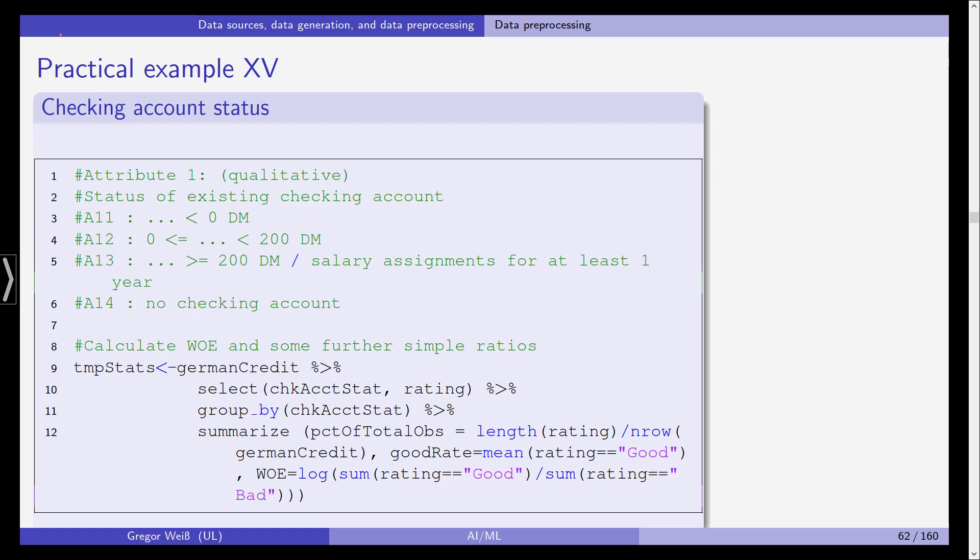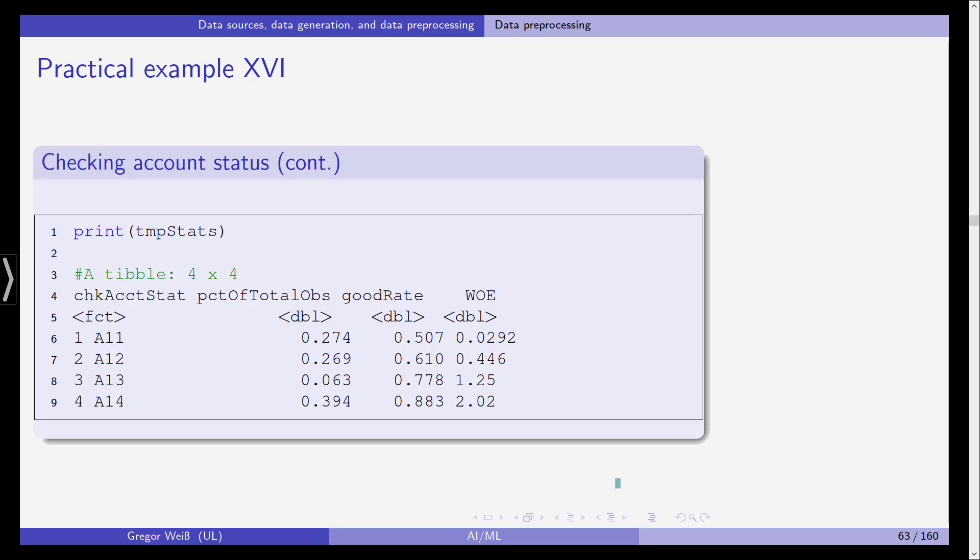We are using the pipe operator again from the DPLYR package. You need to select the checking account status. That's the new variable name we've given, this was V1. And what we are also calculating is the percentage of total observations, which is just simply the length of rating divided by the number of rows. A good rating is the mean when rating is good and the weight of evidence as defined on the previous slide is the log of the sum of good ratings divided by the sum of bad ratings.